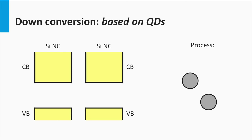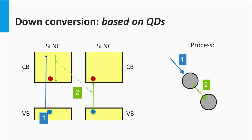Multiple exciton generation in an ensemble of quantum dots is quite similar. Again, in one particle an electron is excited into the conduction band. This quantized energy package is transferred to a neighboring quantum dot, where a second electron is excited into the conduction band. If the charge carriers are separated and collected before they recombine, the result is that one photon is able to produce more than one collected electron.